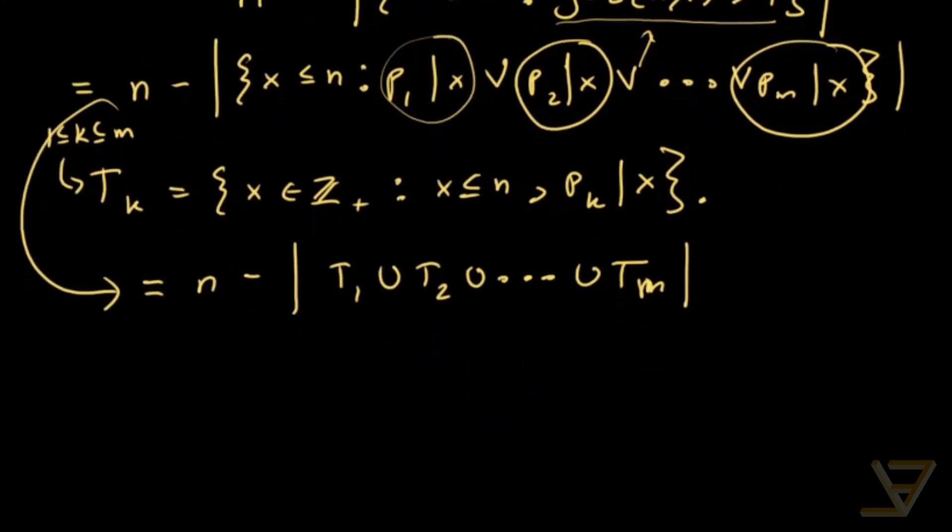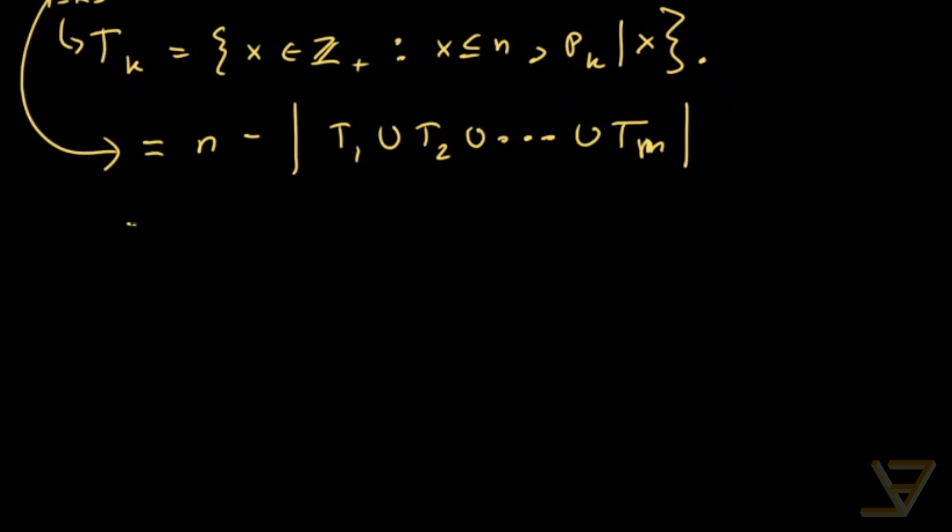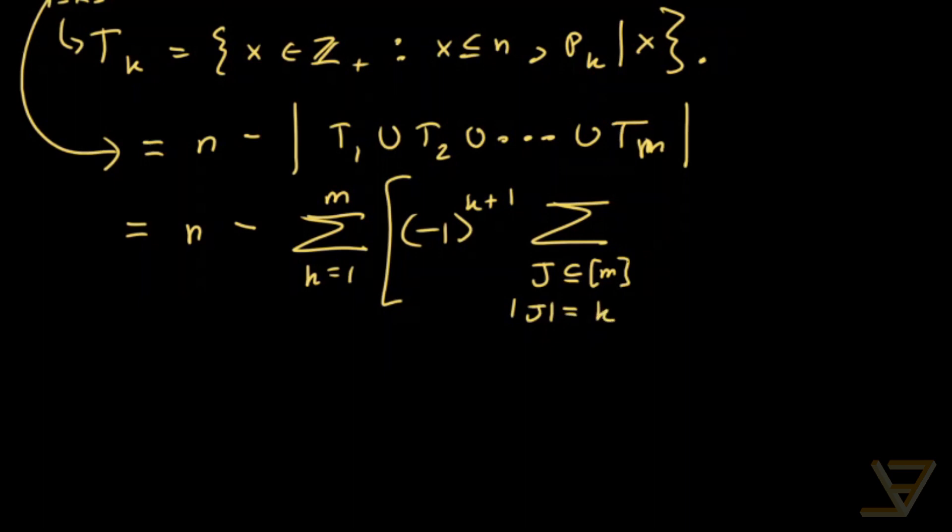And now you can see how we're going to be applying the principle of inclusion-exclusion. This, according to the principle of inclusion-exclusion, is equal to n minus the sum of k equals 1 through m with alternating signs, starting with negative 1 to the power of k plus 1. And we have this complicated looking sum, but it should be familiar to you if you're familiar with the principle of inclusion-exclusion. J has cardinality k, and we take the intersection of all the Tj's for little j in big J.